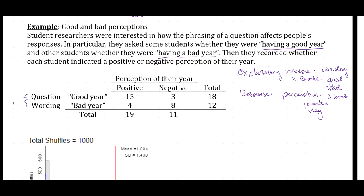The response variable has two levels — a positive or negative perception. Here we've got our explanatory variable on the rows and our response variable on the columns. We see that 18 students were asked whether they were having a good year and 12 students were asked whether they were having a bad year. Of the 18 asked about a good year, 15 responded with a positive perception and 3 with a negative perception. Of the 12 asked about a bad year, 4 responded positively and 8 responded negatively.